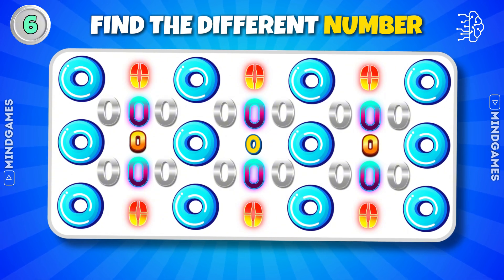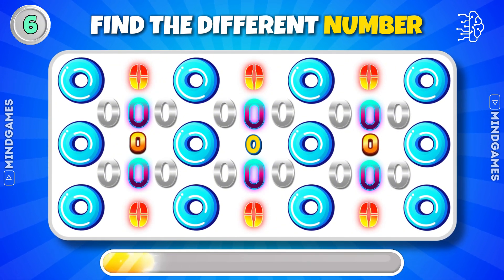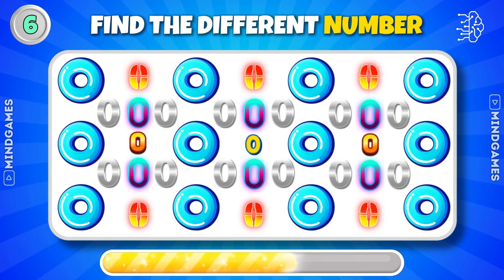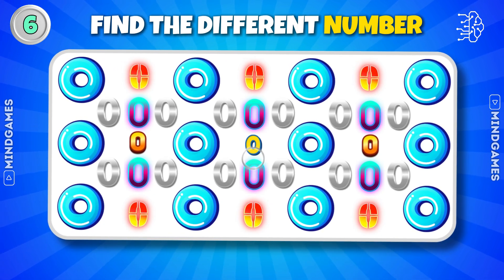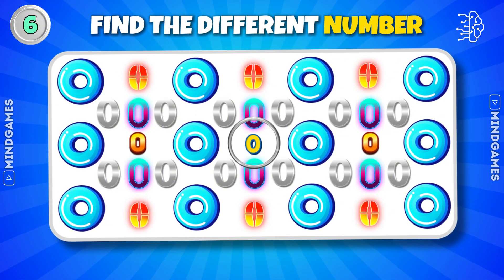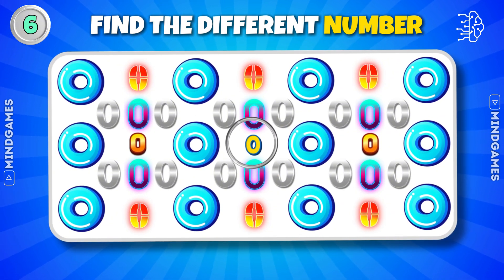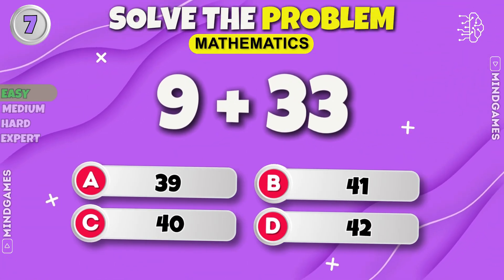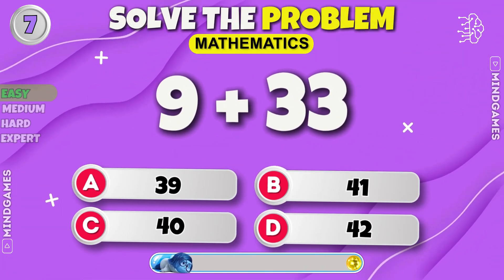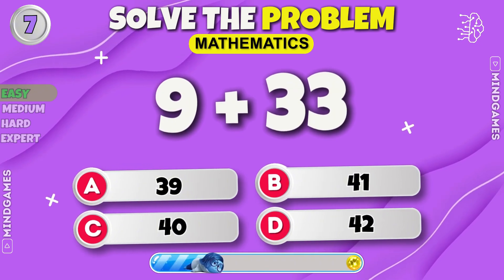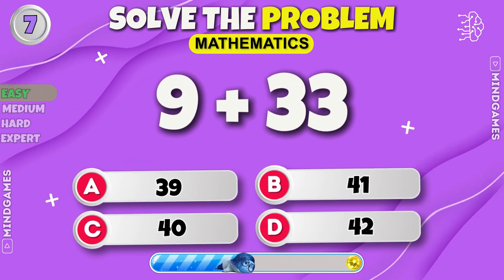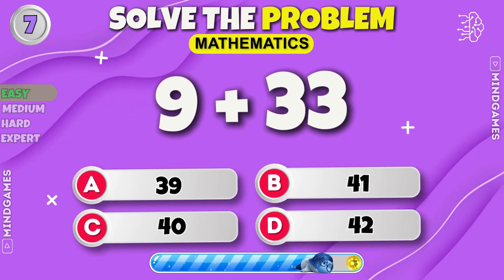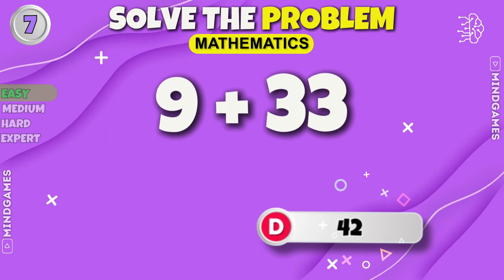Find the number different from the others. There you go — the one in the middle of all numbers. Question number 7. The answer is 42.